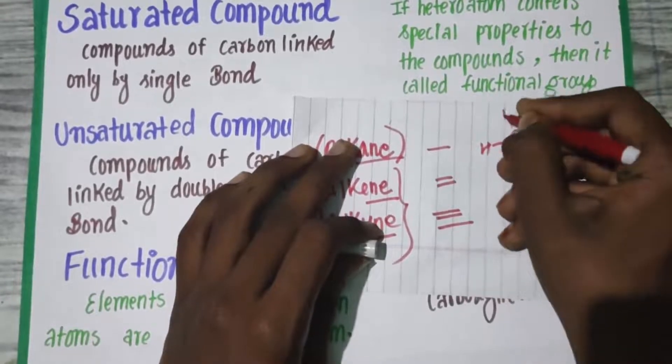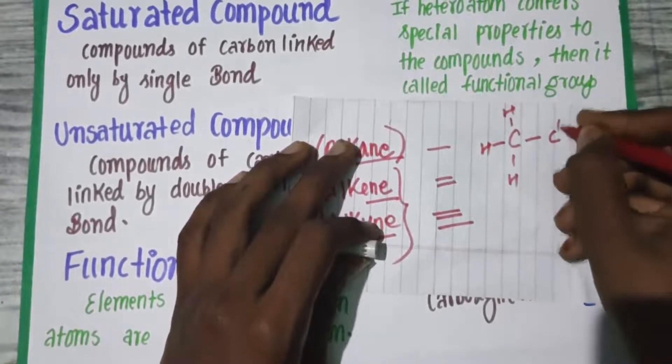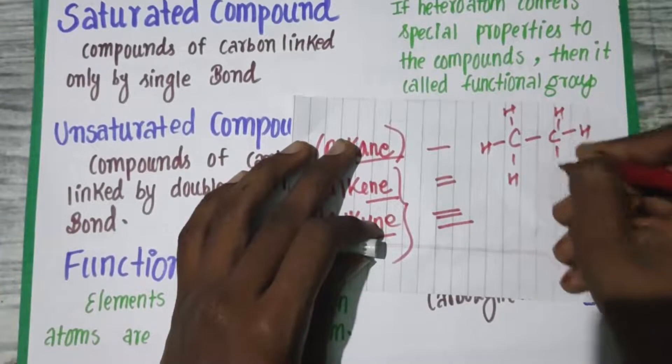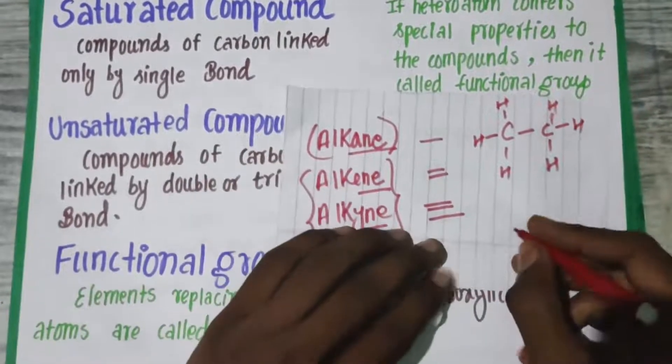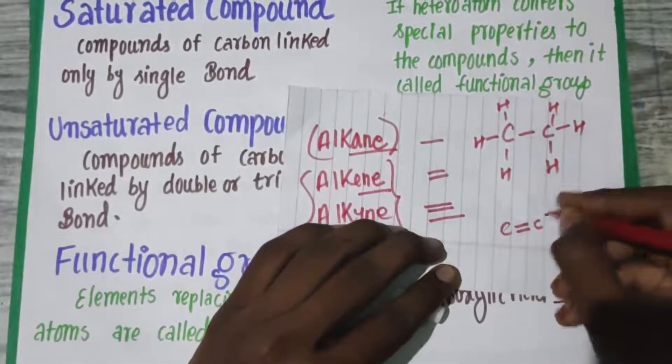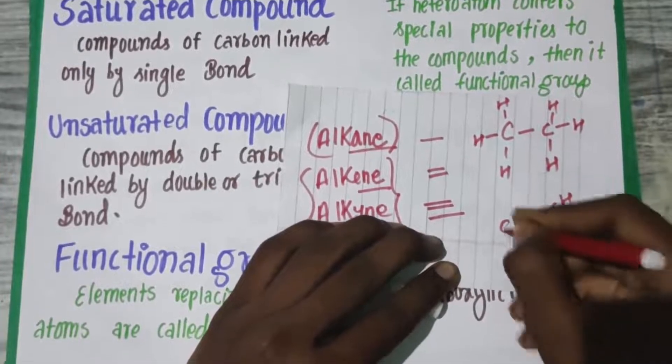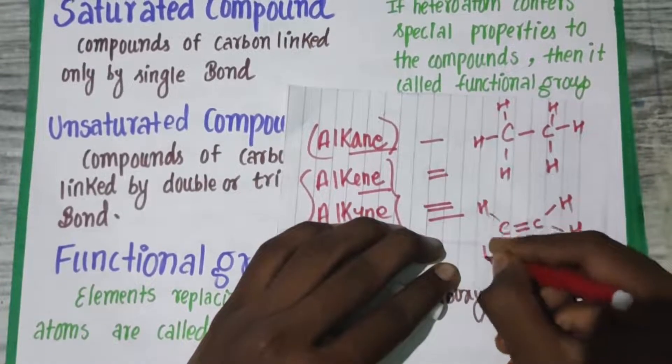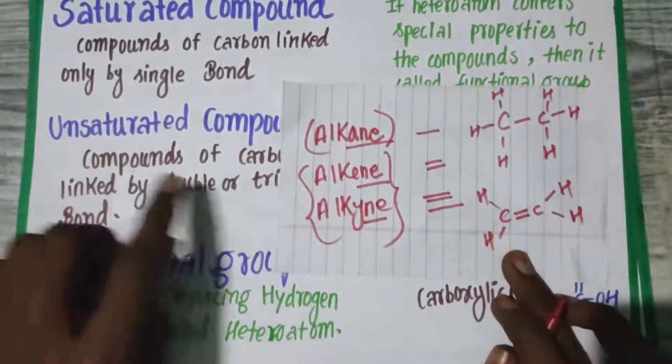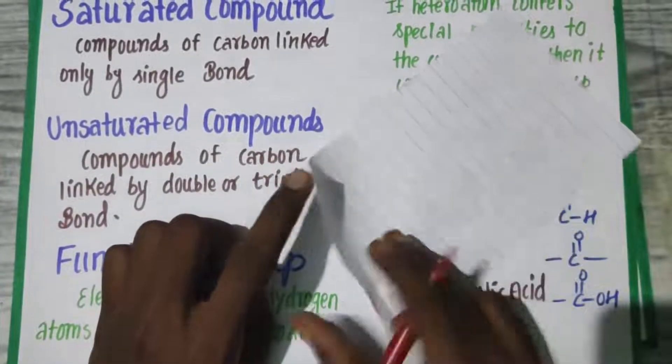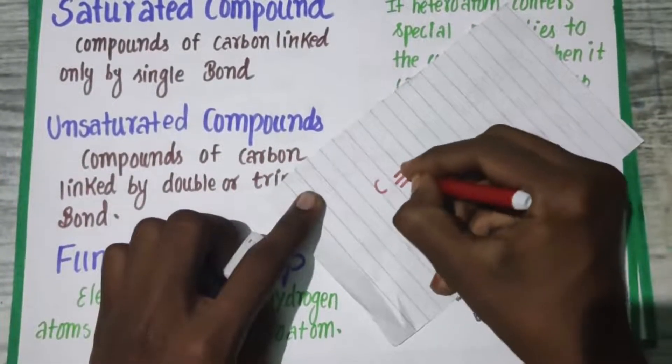This is the example of ethane, a saturated compound. An unsaturated compound linked by a double bond is an alkene. Similarly, you can also link carbon by a triple bond.